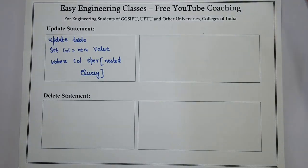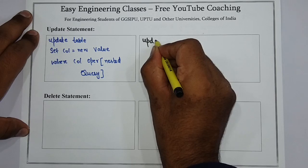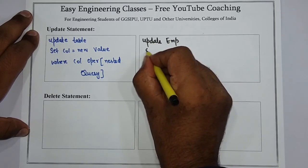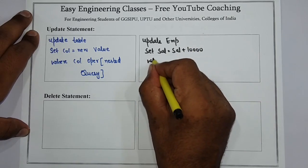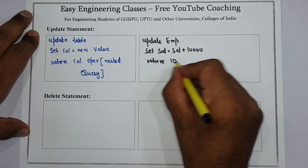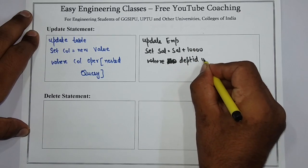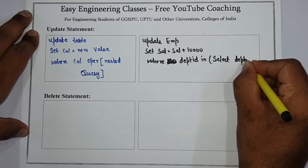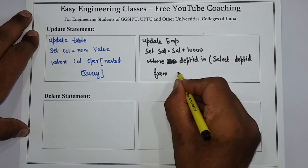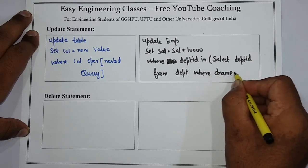Suppose I want to increase the salary of all employees working in the finance department. I will write: UPDATE employee SET salary = salary + 10000 WHERE department_id IN (SELECT department_id FROM department WHERE department_name = 'Finance').